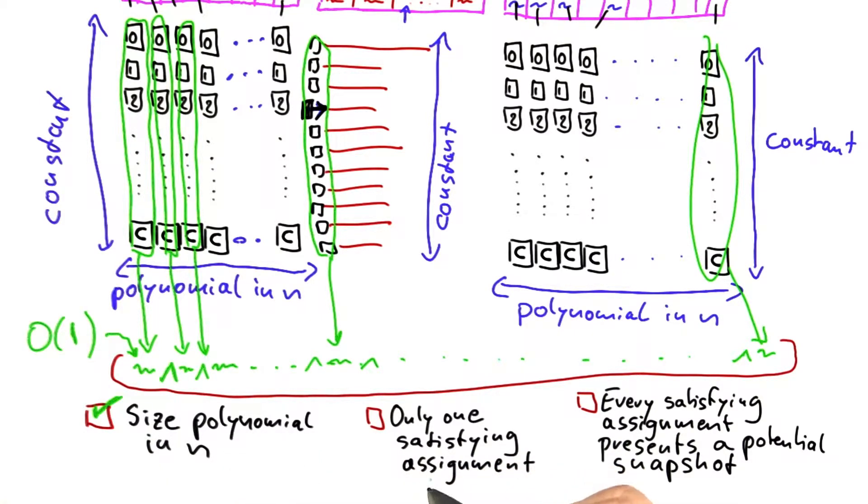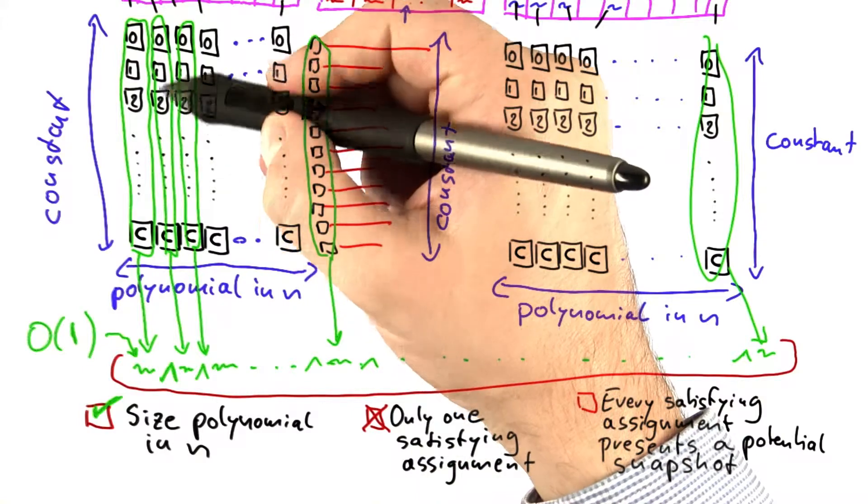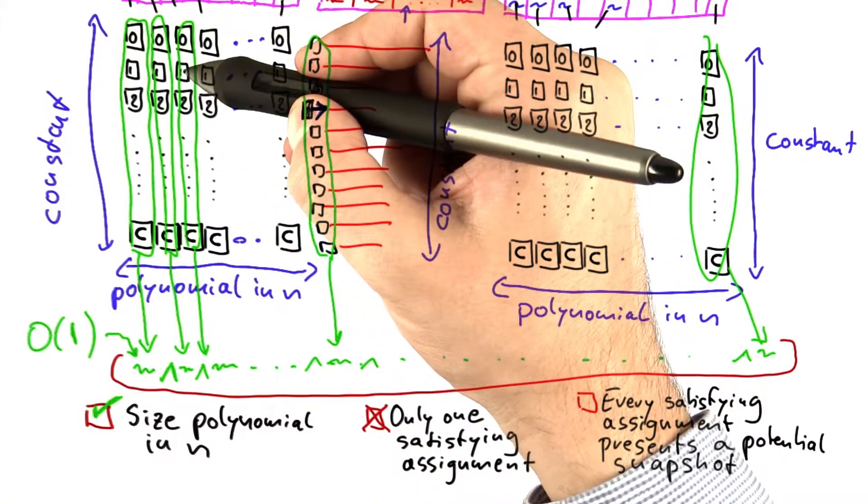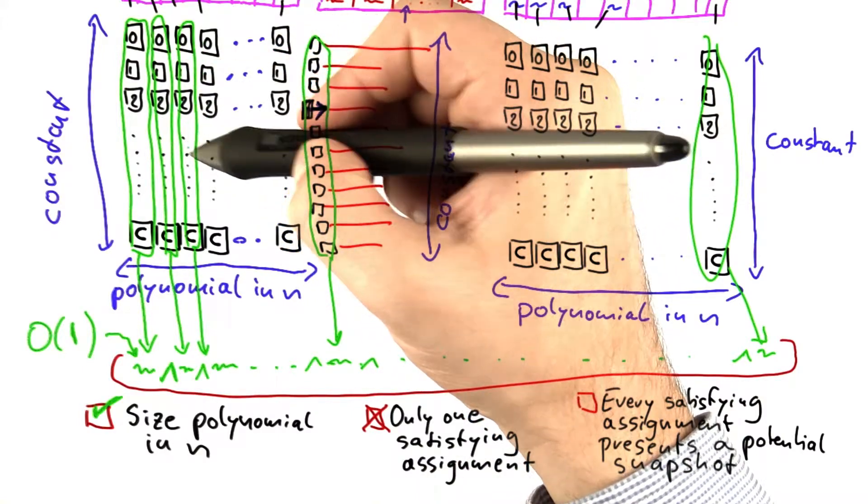Does this formula have only one satisfying assignment? No, it doesn't. It has a huge number of satisfying assignments. But each of those satisfying assignments will ensure that exactly one of the variables here is set to true and so on.